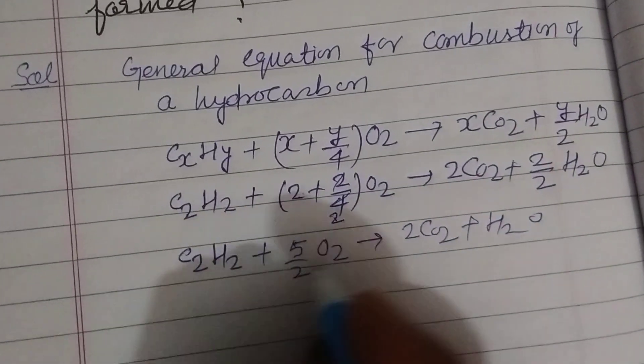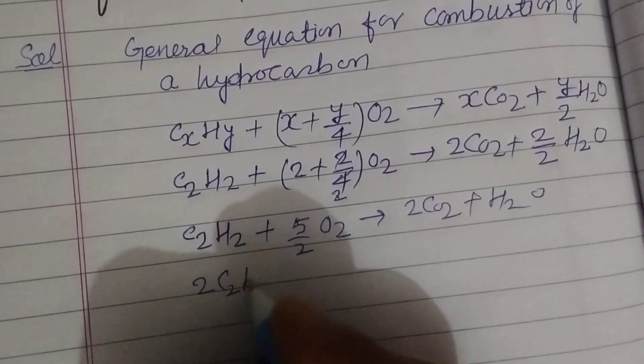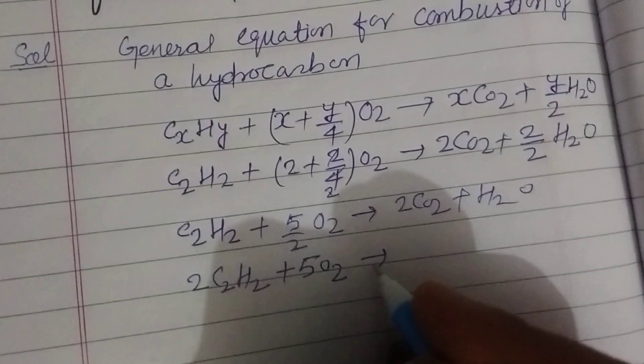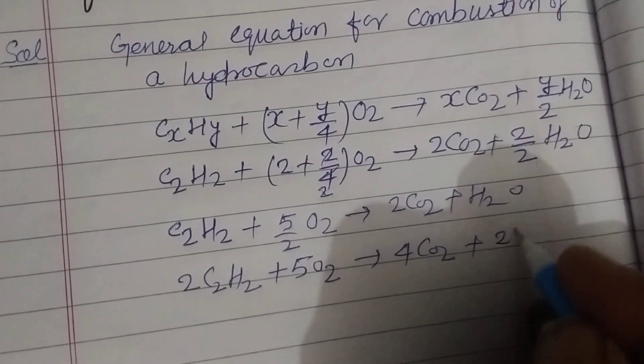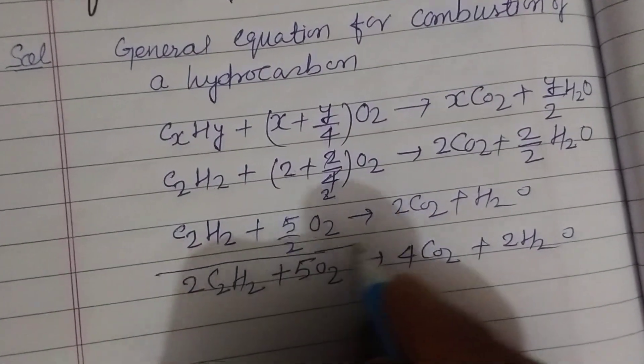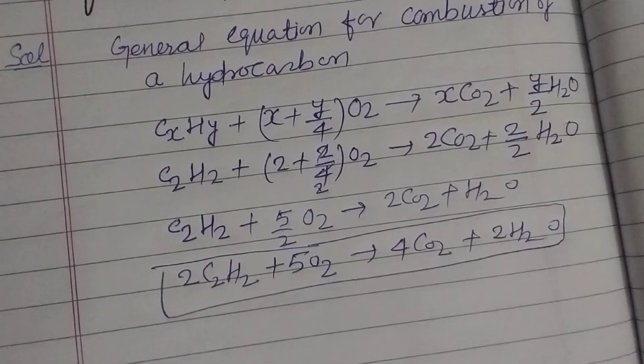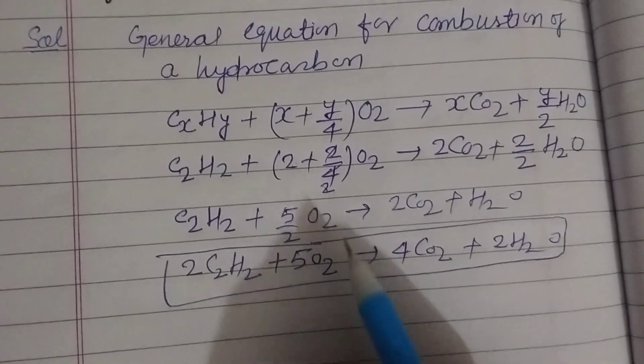Multiplying all equations by 2, so this is 2 C2H2 plus 5 O2 equal to 4 CO2 plus 2 H2O. So this is the combustion equation of acetylene. You can easily find it by using this general formula of any hydrocarbon.